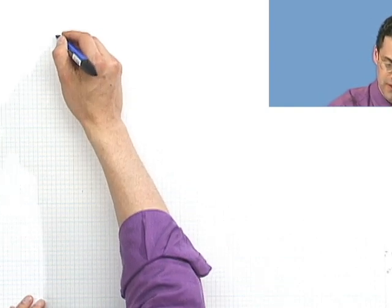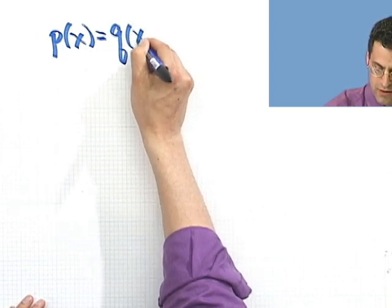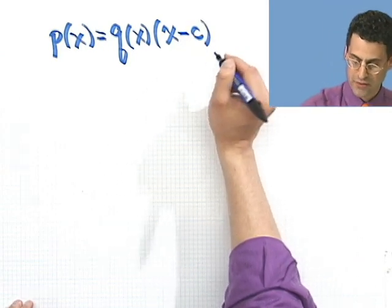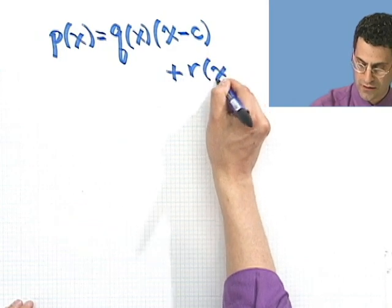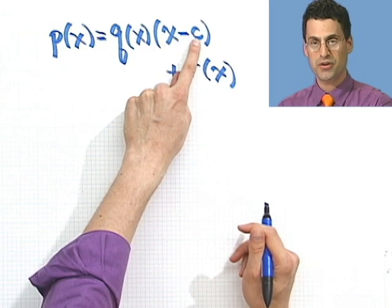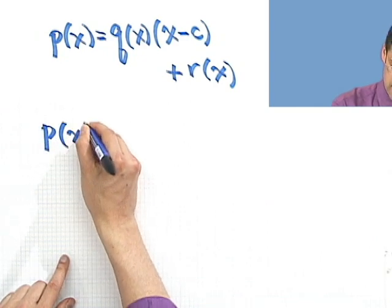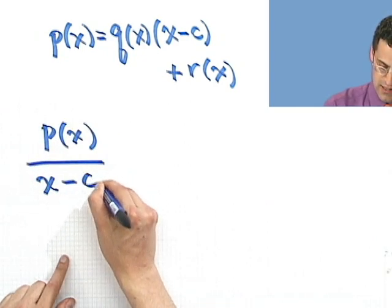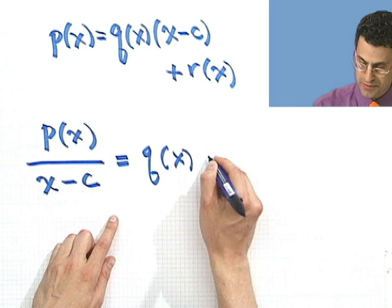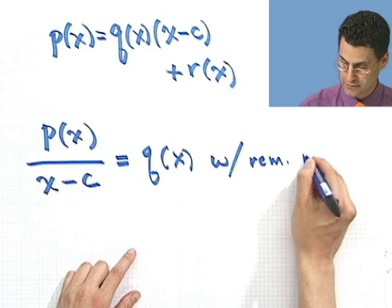At the end of the day, I'd have something like this: p of x equals q of x times x minus c, and then I add the remainder. So I take p of x, I'm going to divide it by x minus c. And what I get is q of x plus the remainder term, with remainder r of x.